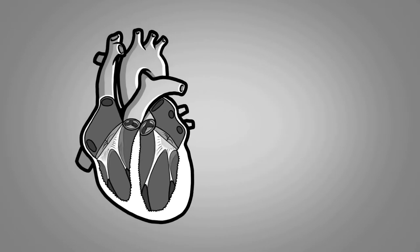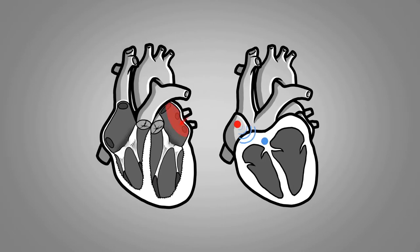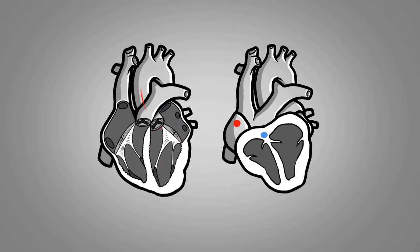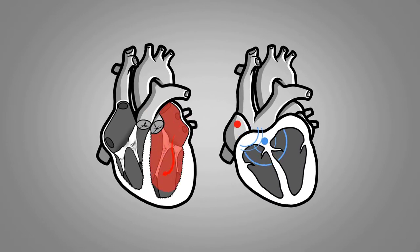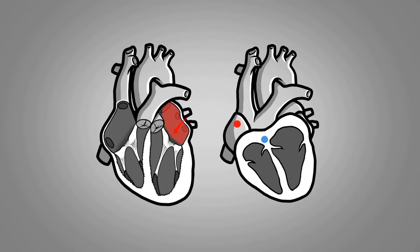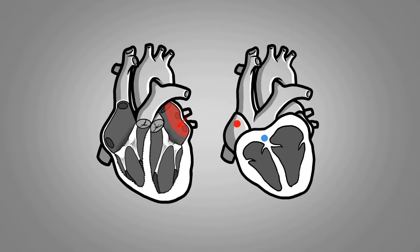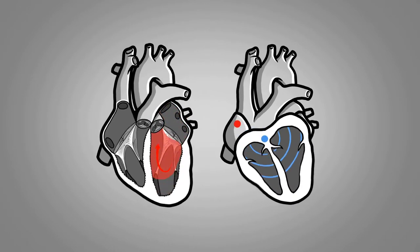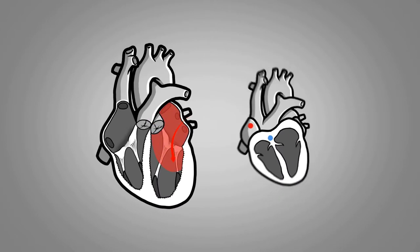This configuration ensures the mitral valve does not leak. The electrical system in the heart causes contraction of the ventricles from the bottom to the top. The pressure generated by the contraction of the left ventricle pushes blood from the bottom to the top and in doing so, closes the mitral valve.